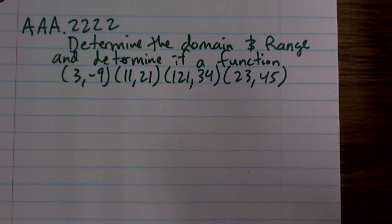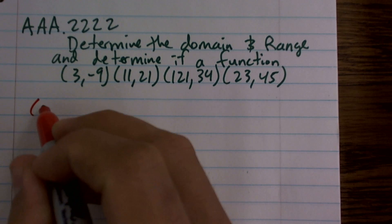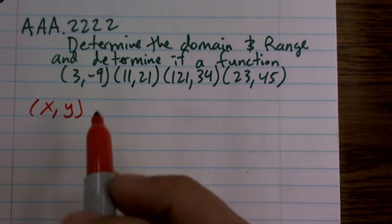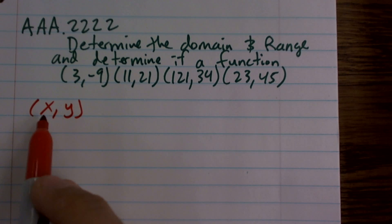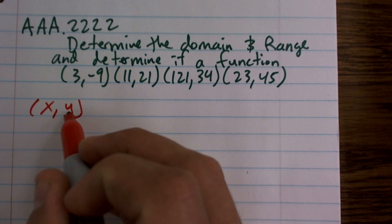Remember, domain is your set of x values or your input values, and your range is your set of output values or your y values. So when we think of domain and range, it's very common for us to think of input and output, and also think of it as x and y's. So here, my x is my input and my y is my output.